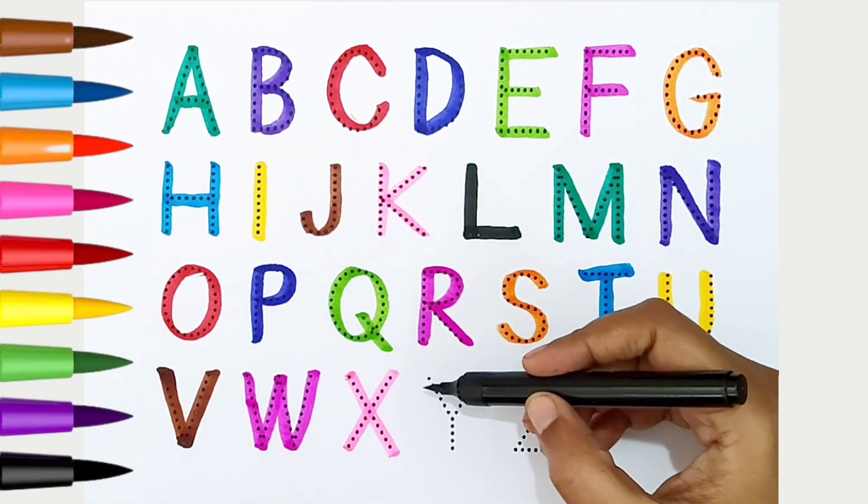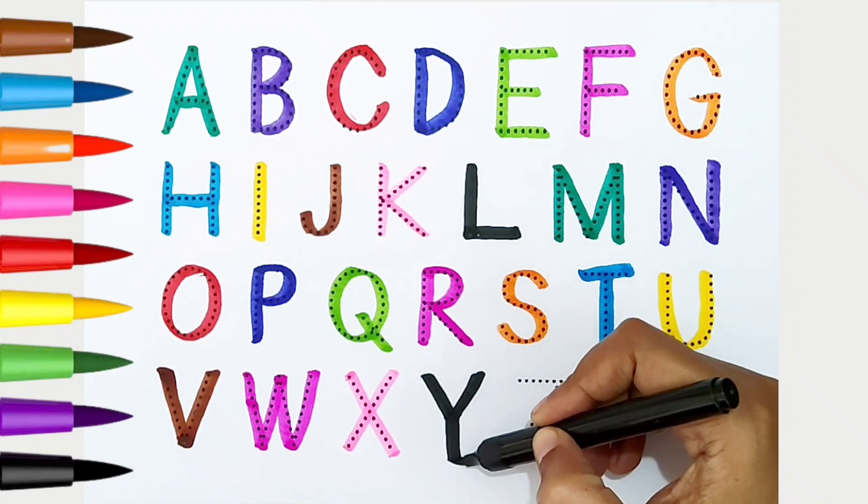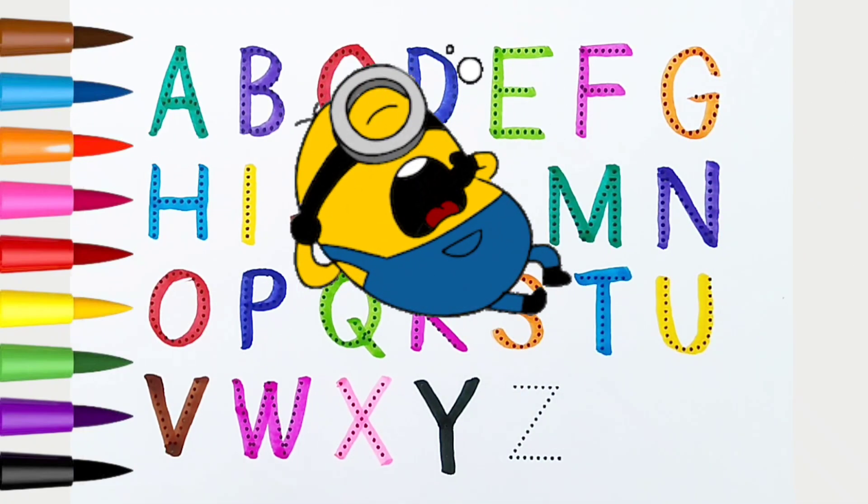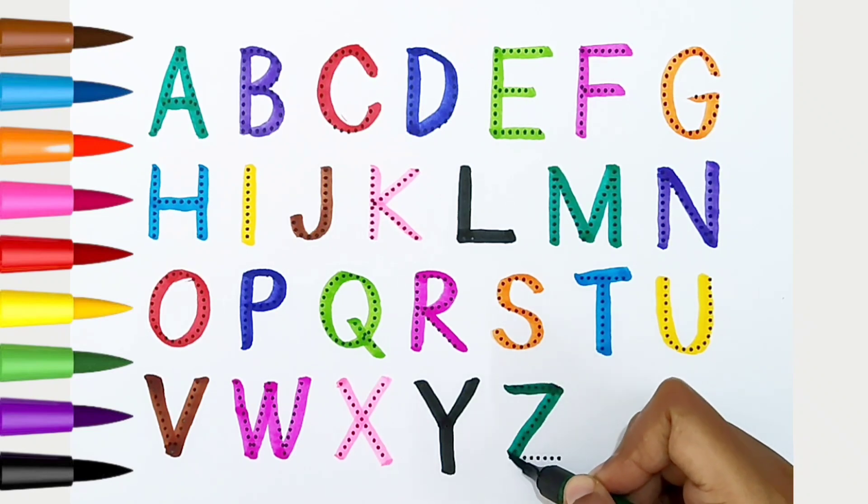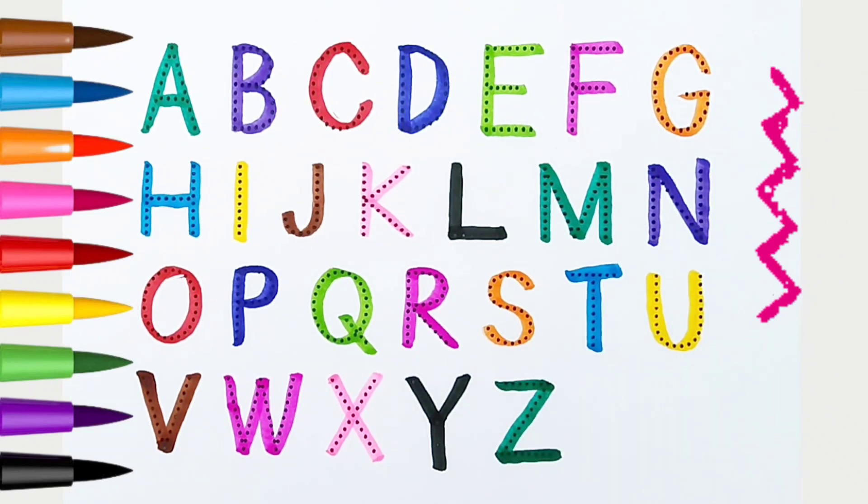Y, black color. Y is for yawn. Z, light green color. Z is for zigzag. Once again!